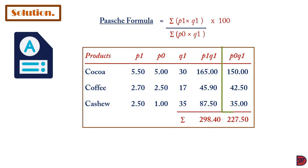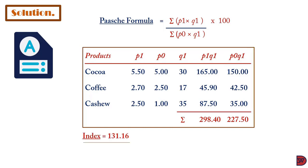Multiplying the base price by the selected quantity for cashew gives $35.00. The summation of selected price times selected quantity gives $298.40, and the summation of base price times selected quantity gives $227.50. The Paasche index is therefore 298.40 ÷ 227.50 × 100 = 131.16. Comparing the two, the Paasche index shows a greater increase across the three products than the Laspeyres index.